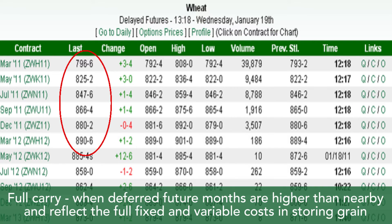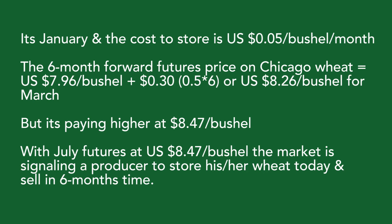In our wheat example, deferred future months have a full carry — in other words, higher prices to compensate for the cost to carry that commodity out six months. The carrying costs include financing, storage, shrink, and insurance to hold that grain out six months. For example, if in January the cost to store U.S. wheat is $0.05 per bushel per month, or $0.30 per bushel over six months, the six-month forward futures price in Chicago should equal $7.96 plus $0.30 — or $8.26. In our July futures contract, we're trading at $8.47 per bushel, so the market is signaling to the producer to store wheat today and sell in six months' time.